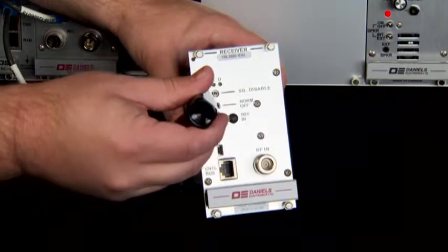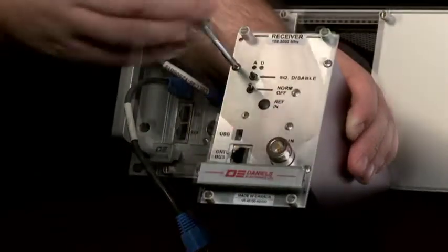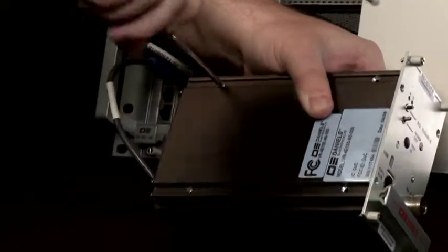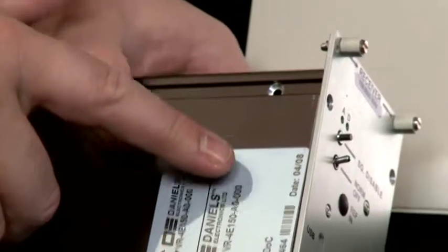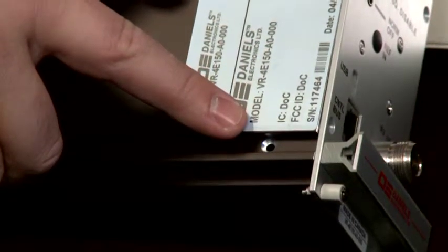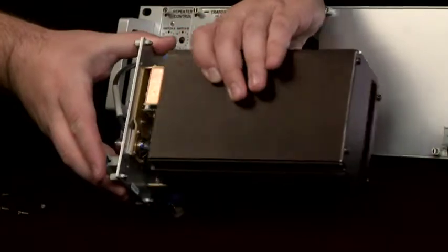Removing the cover of the receiver requires four Phillips screws to be removed from the front panel of the receiver, as well as two Phillips screws from the side of the receiver. Two screw holes on the side of the receiver are not used. Slide the cover off of the receiver.